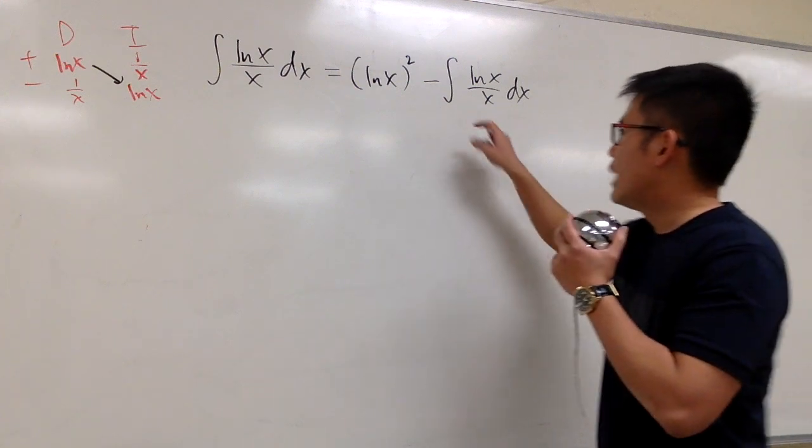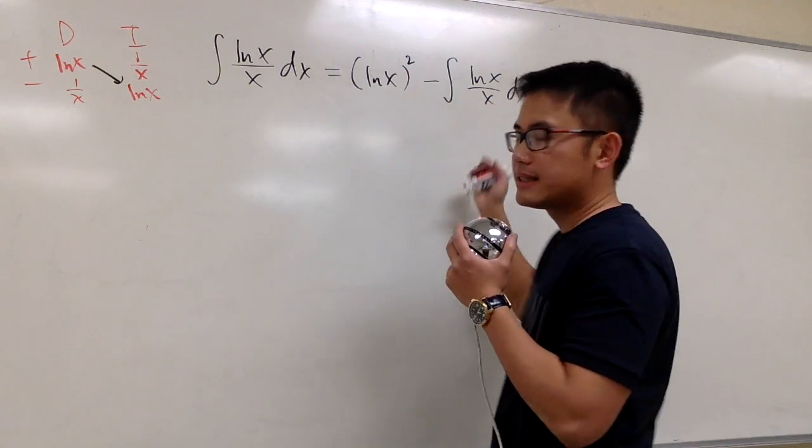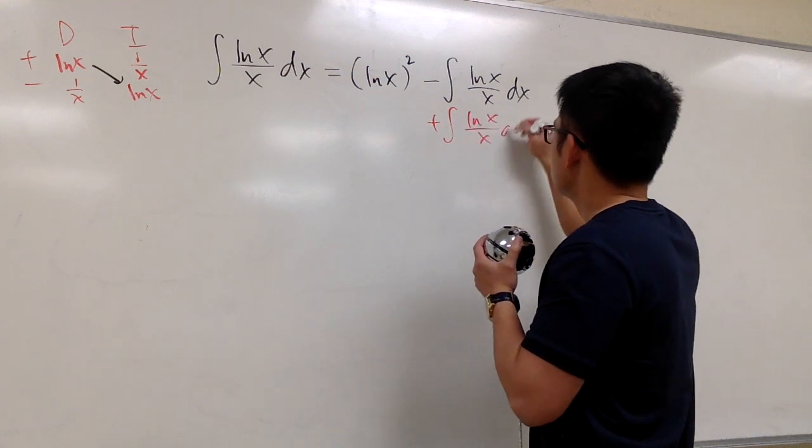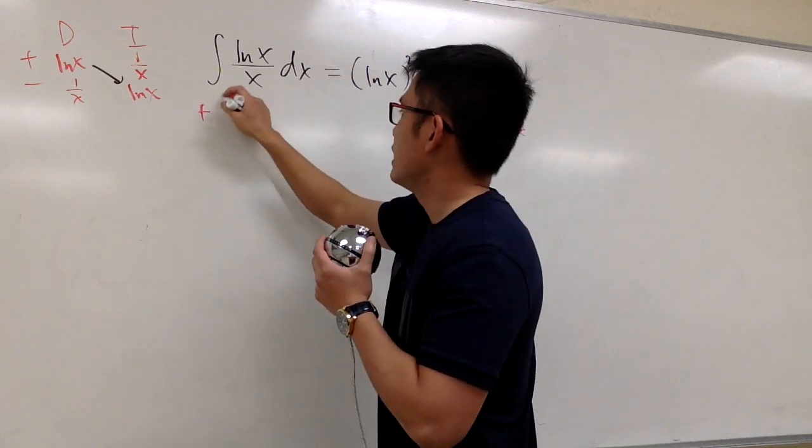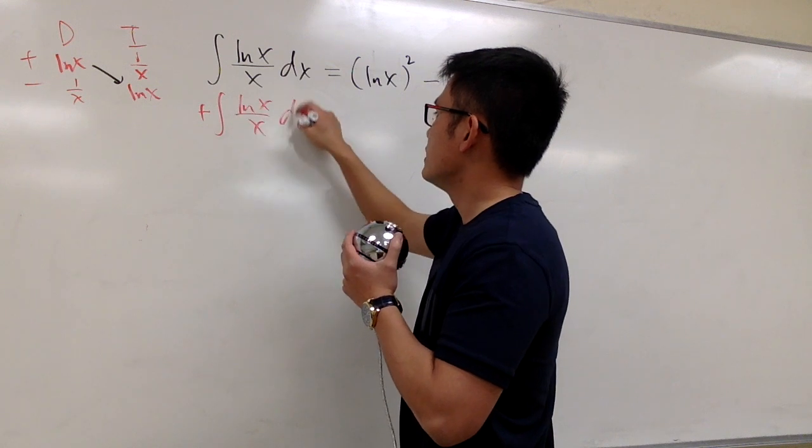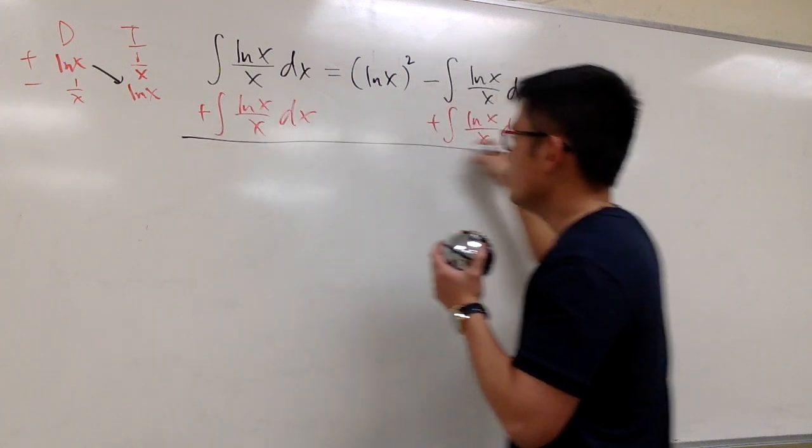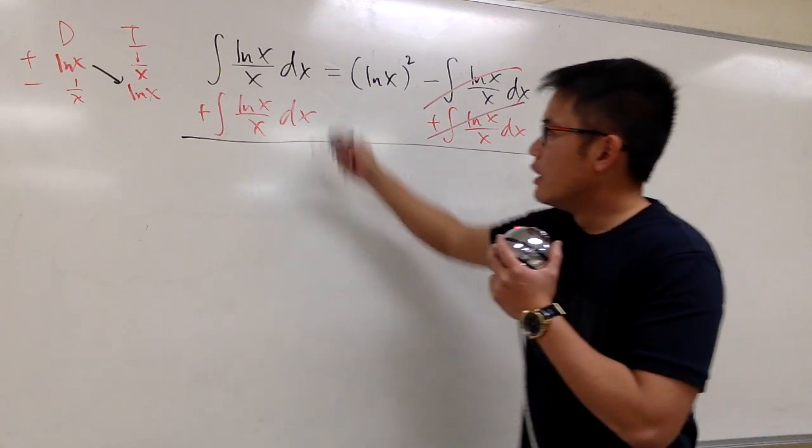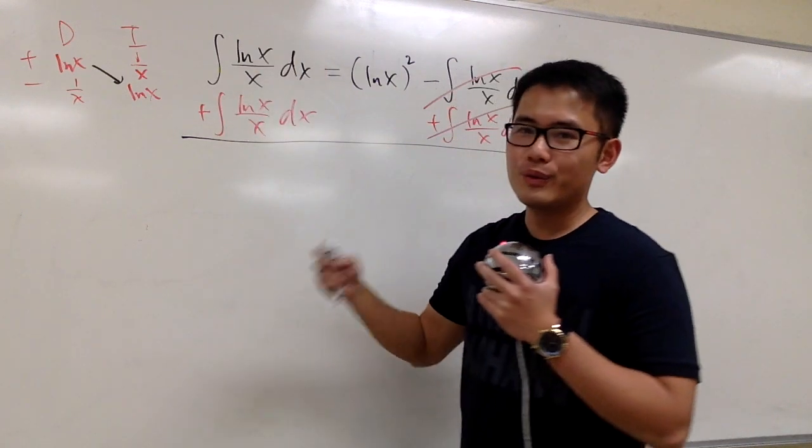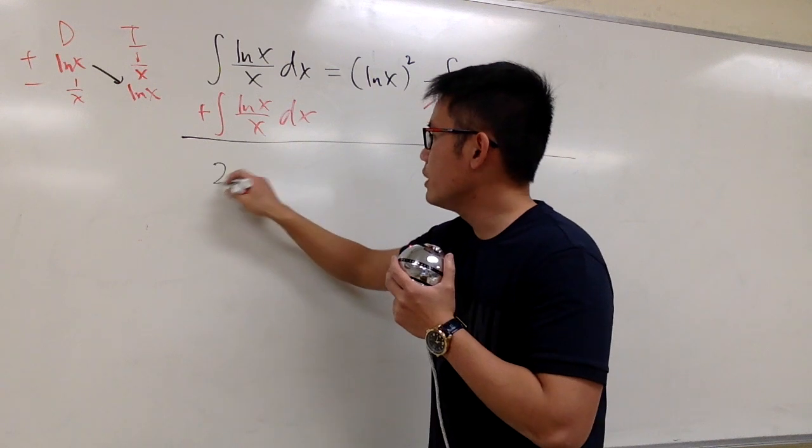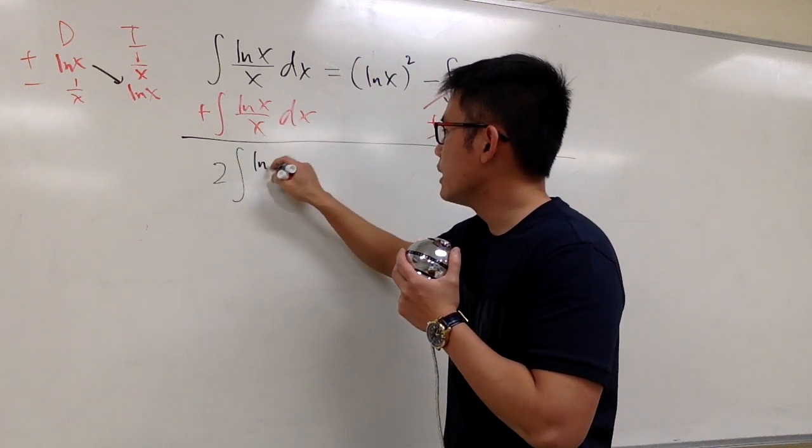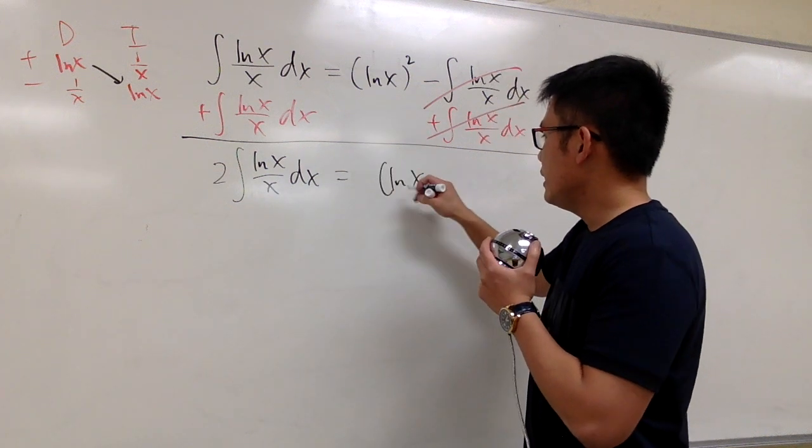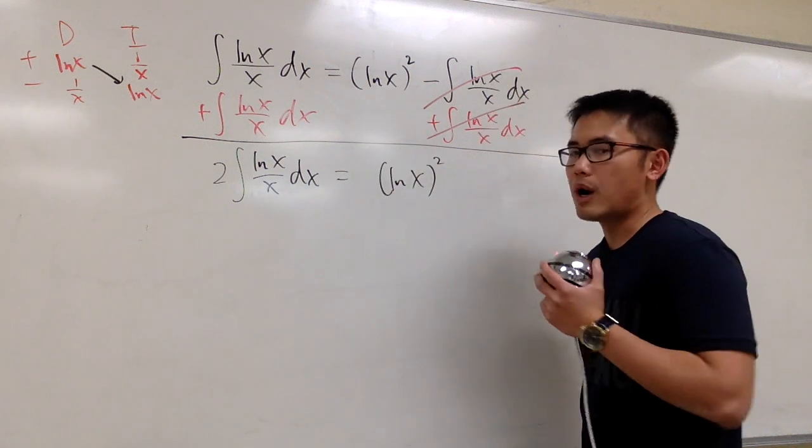And then the deal is, I will add this on both sides. Plus integral ln x over x dx. And then you will see, this and that cancel out. One integral plus another one, we have two of them. So we have two integral of ln x over x dx, and this is the same as ln x in the parentheses to the second power.